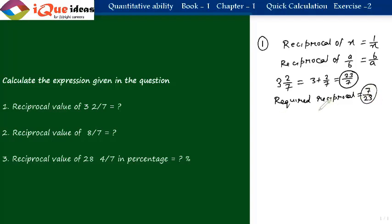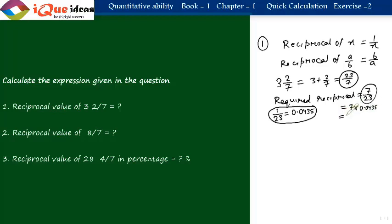To find the decimal value of 7/23, use division or recall that 1/23 equals 0.0435. Multiplying by 7: 7 fives are 35, carry 3; 7 threes are 21 plus 3 is 24, carry 2; 7 fours are 28 plus 2 is 30, carry 3; 7 zeros plus 3 is 3. So the decimal value is approximately 0.3045, and 7/23 is the fraction value.